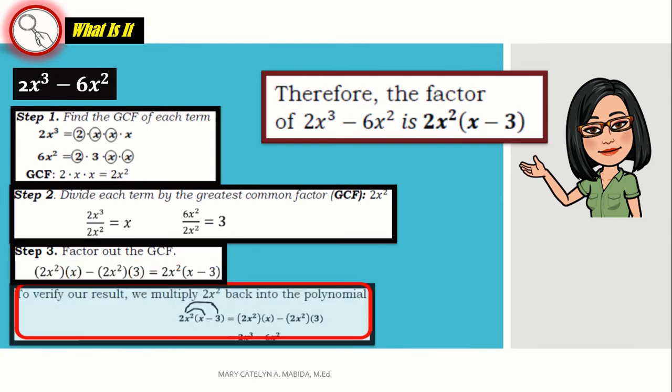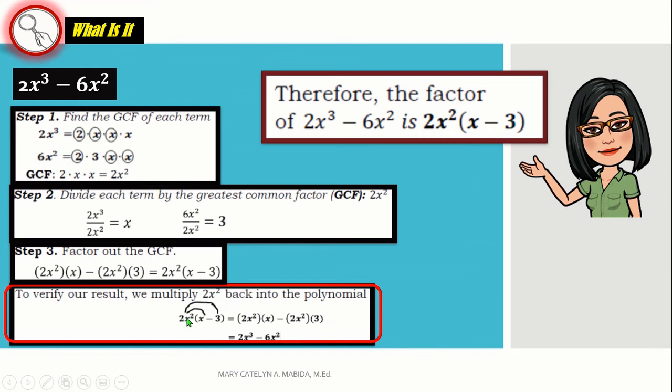Now, to verify our result, we multiply 2x squared back into the polynomial. 2x squared times x, 2x squared times 3. There you go. And you get 2x cubed minus 6x squared.